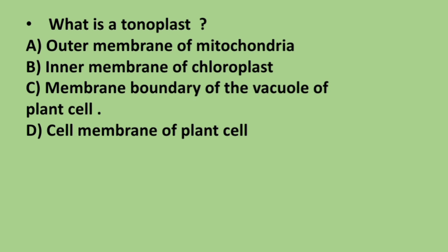Next question: what is a tonoplast? Options are outer membrane of mitochondria, inner membrane of chloroplast, membrane boundary of the vacuole of plant cell, or cell membrane of plant cell. The correct answer is option C: membrane boundary of the vacuole of plant cell.